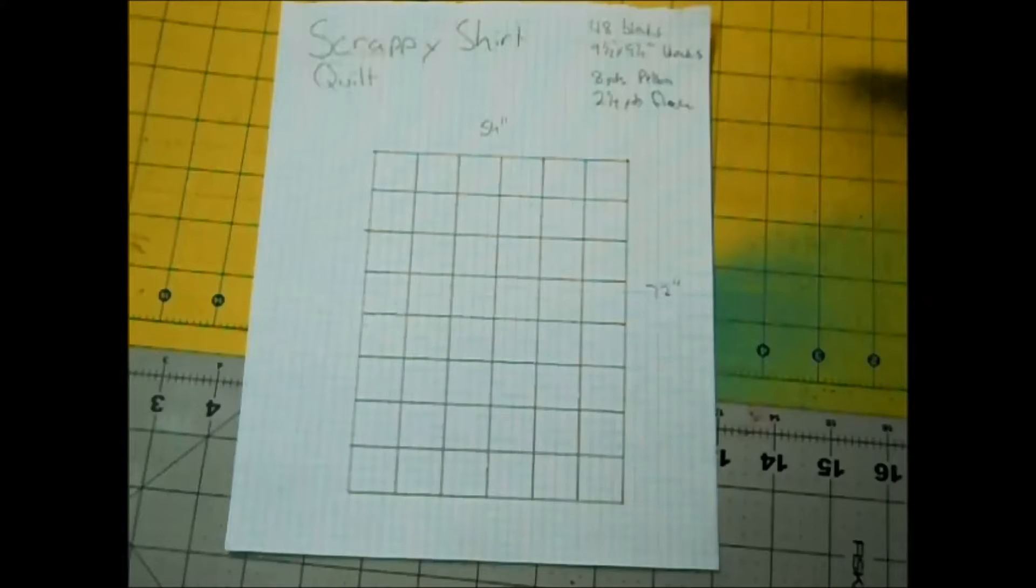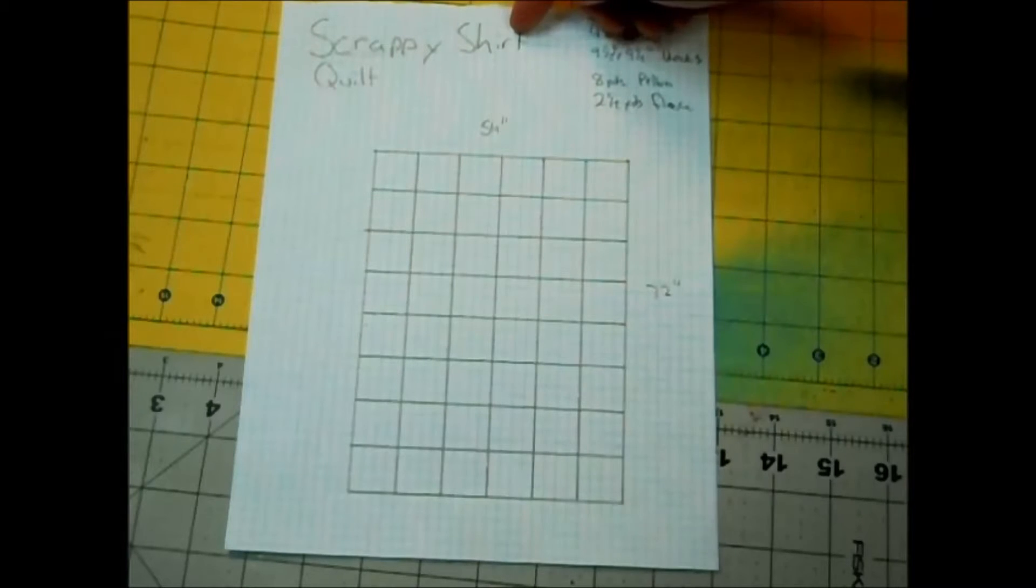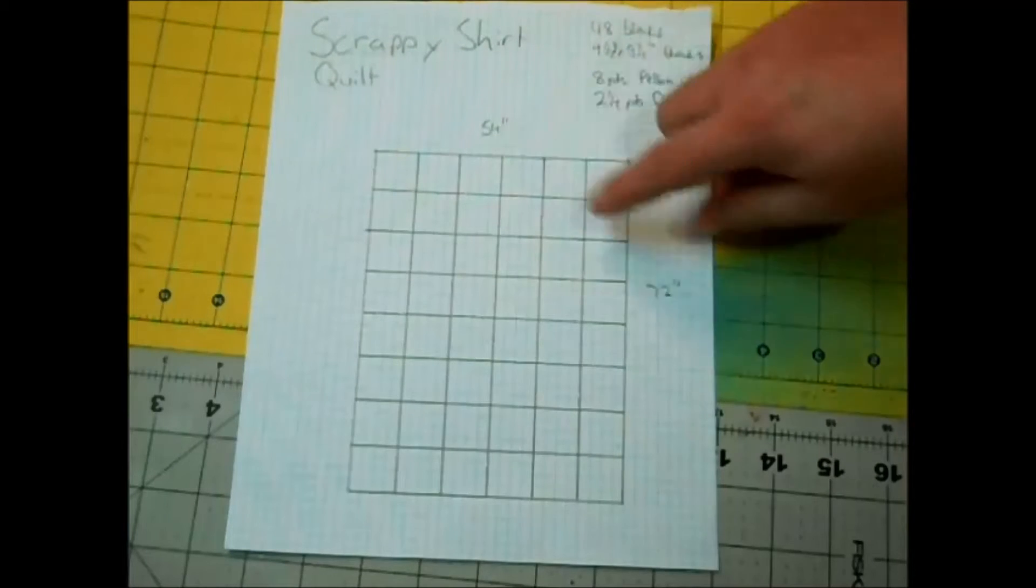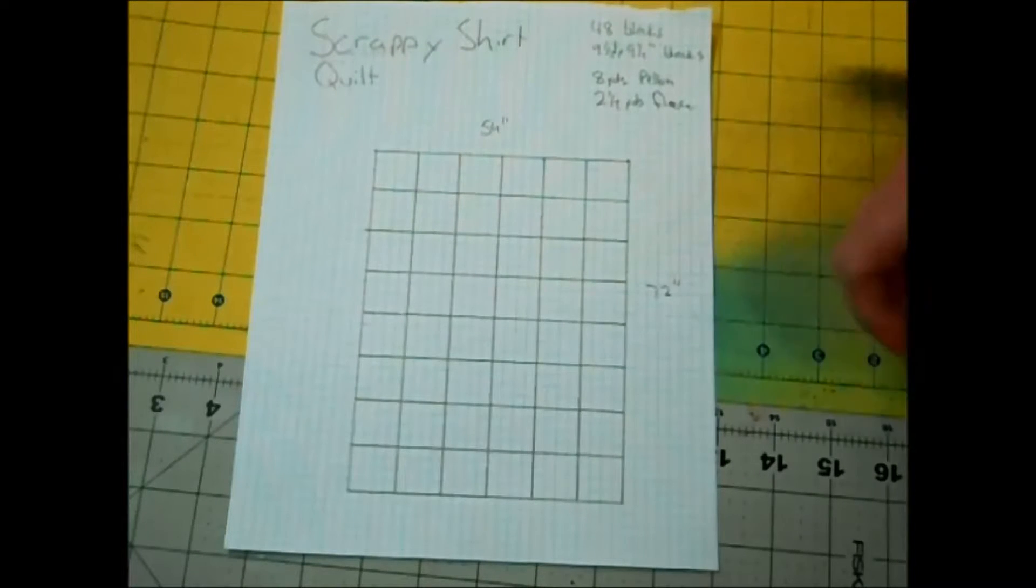What's up YouTube? For the next few sewing videos I'm going to show you how I make this scrappy shirt quilt. This quilt when finished will be about 54 inches wide by 72 inches long and for me that's the perfect size throw.